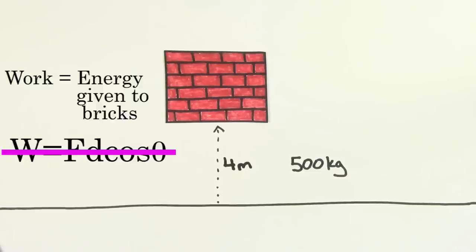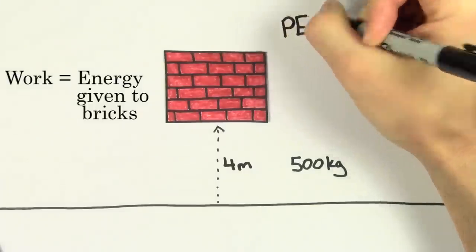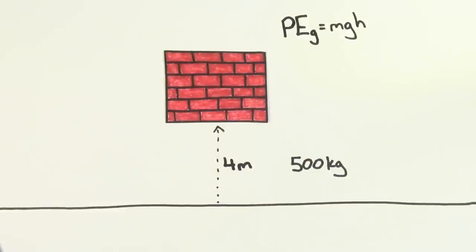We could just figure out the amount of energy that we've given to the bricks. The bricks gain gravitational potential energy, which is given by the formula MGH.